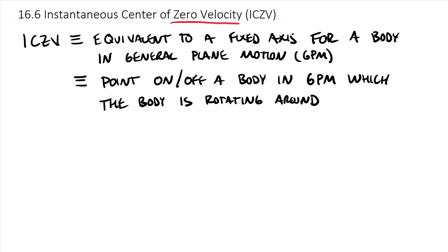Now the cool thing about instantaneous centers of zero velocity, if we go back to our fundamental equation, velocity of B is equal to the velocity of A plus our omega of AB crossed with R of B relative to A, our relative velocity equation, which came out of section 16.5, looking at rigid bodies in general plane motion using the relative velocity approach.